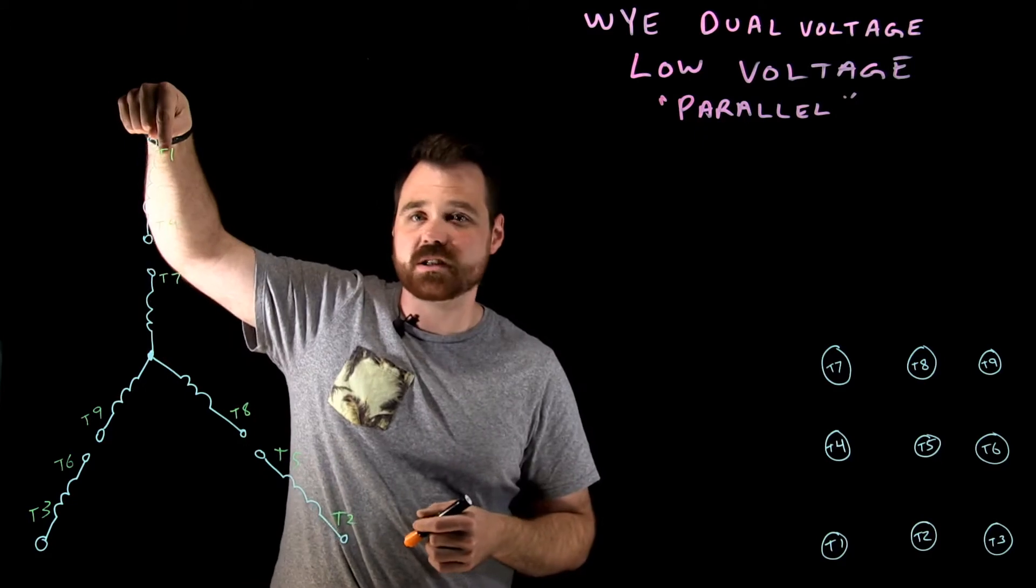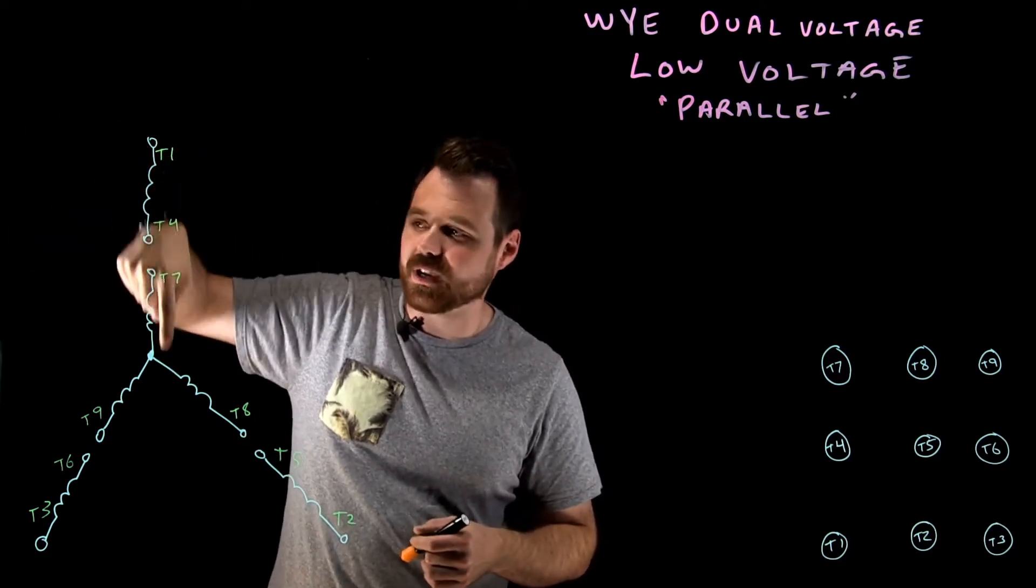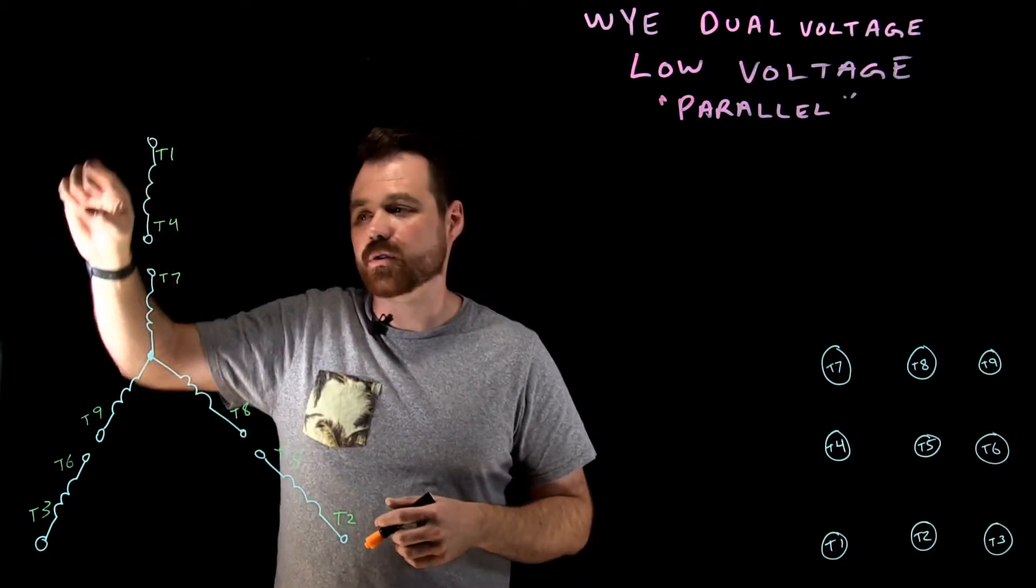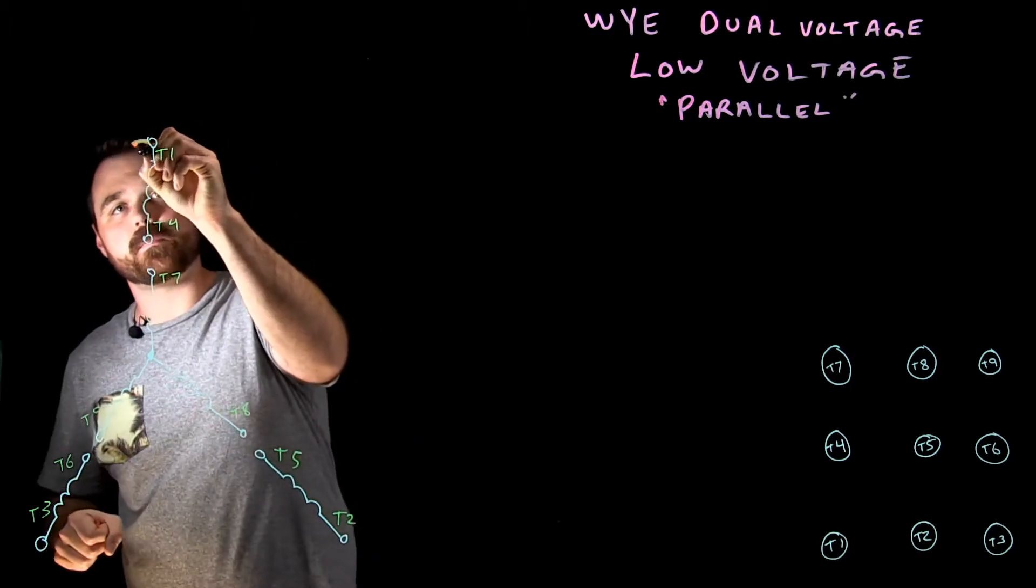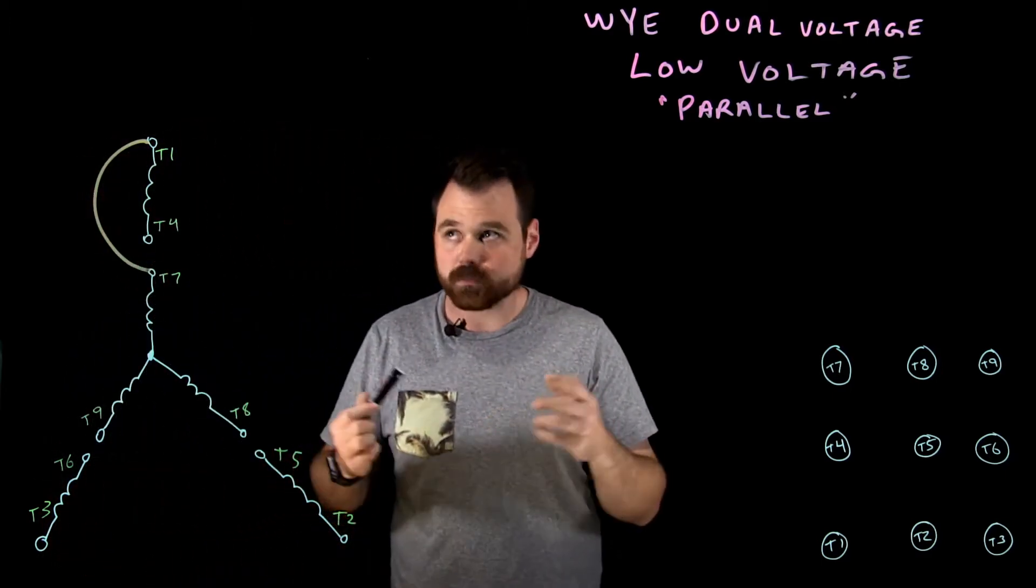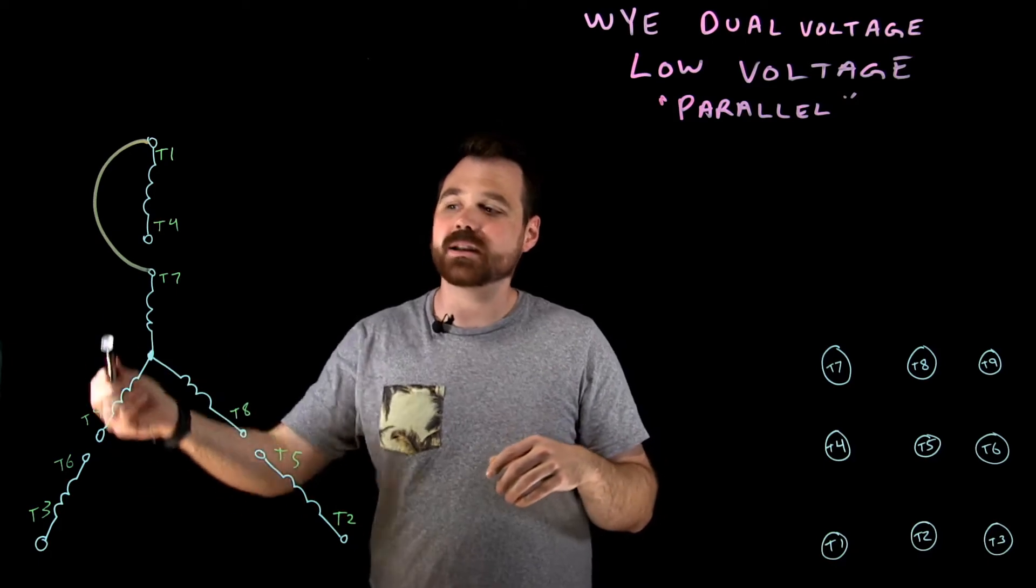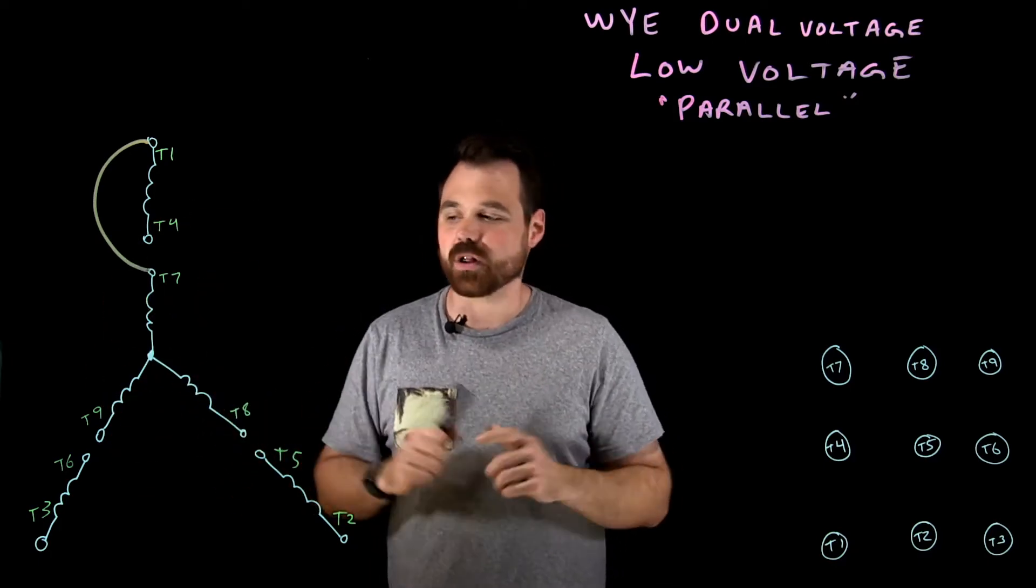So if current is flowing into T1, I also want it flowing into T7. I'm putting those two terminals in parallel with each other. T1 and T7 are in parallel with each other.